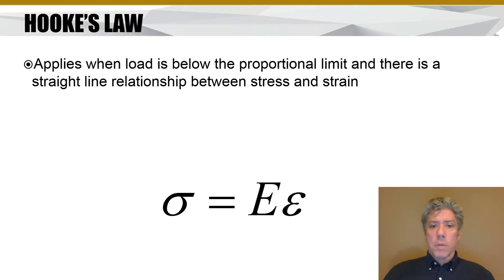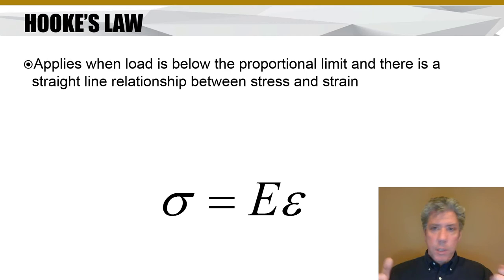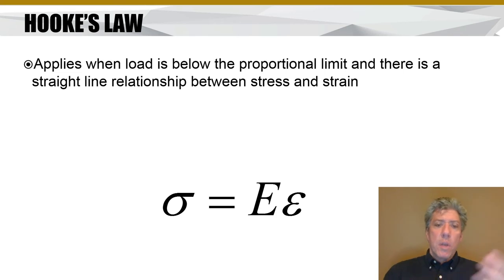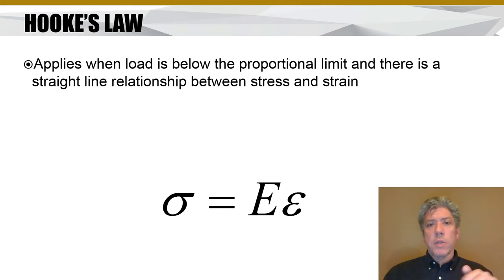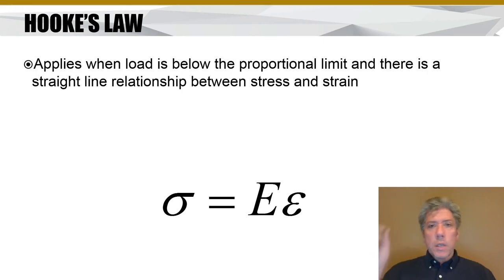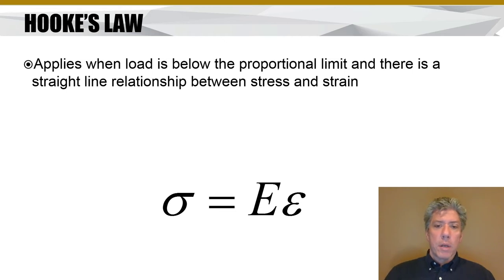Hooke's Law applies as long as we're below the proportional limit — treating the component as if it were a linear spring. In a linear spring, F = kx. The analogous equation here is: normal stress equals the elastic modulus times the strain (σ = Eε). Stress σ on the left is analogous to F in a spring; E is analogous to k (the spring constant); and ε (strain) is analogous to deflection. As long as we're below the proportional limit, the material behaves linearly and we can predict its behavior quite easily.